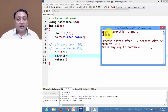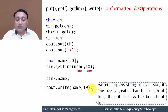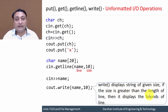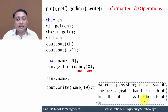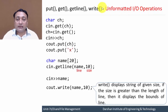The write function displays a string of a given size. If the size is greater than the length of the line, it displays beyond the bounds of that line. This covers all unformatted input-output operations, which can be performed using these four functions: get, put, getline, and write.